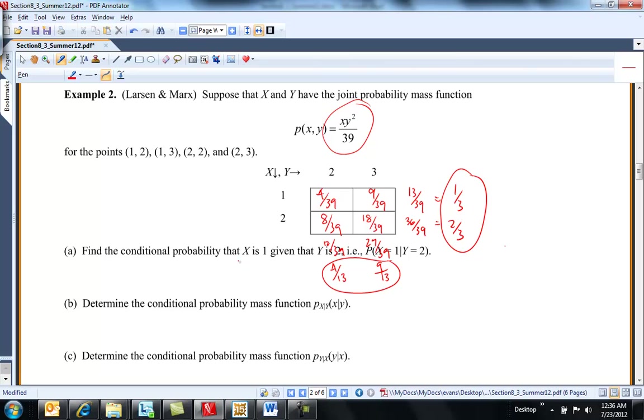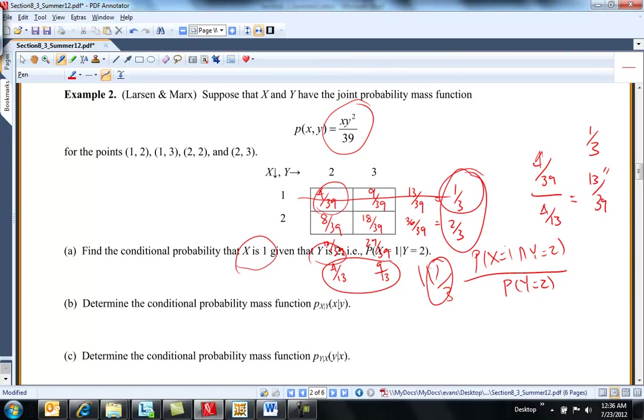Find the conditional probability that X is 1 given Y is 2. So that's the probability that X is equal to 1 and Y is equal to 2 over probability Y is equal to 2. So X equal 1, Y equal 2 is 4/39 divided by Y is equal to 2 is equal to 4/13. So this is 13/39, which is 1/3. So notice that probability X is equal to 1 given Y is equal to 2 is equal to 1/3. But that's the same as probability X is equal to 1 is 1/3. So I can see now I have independence.